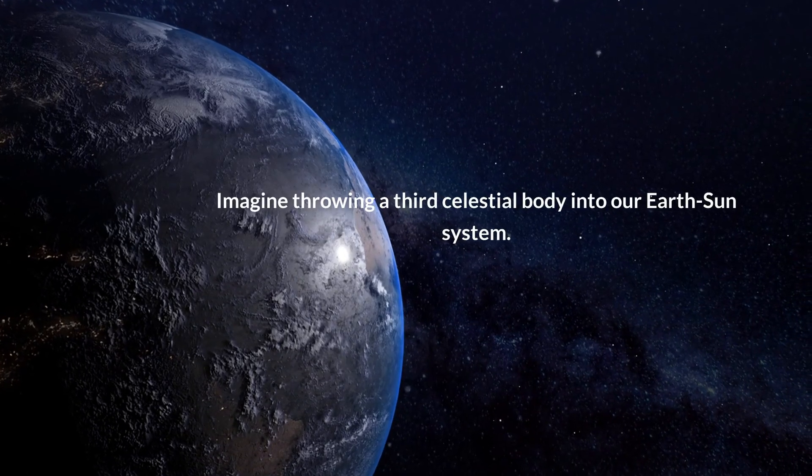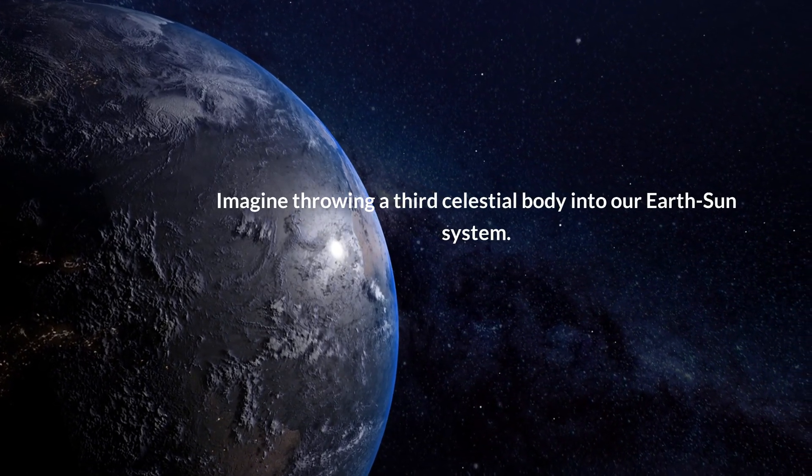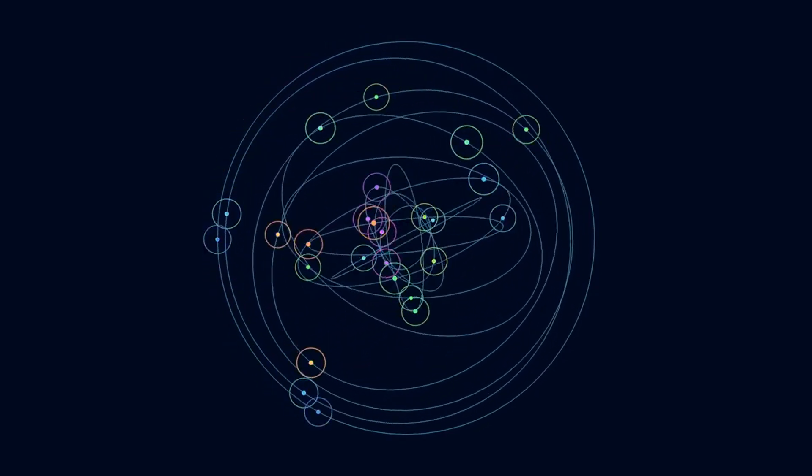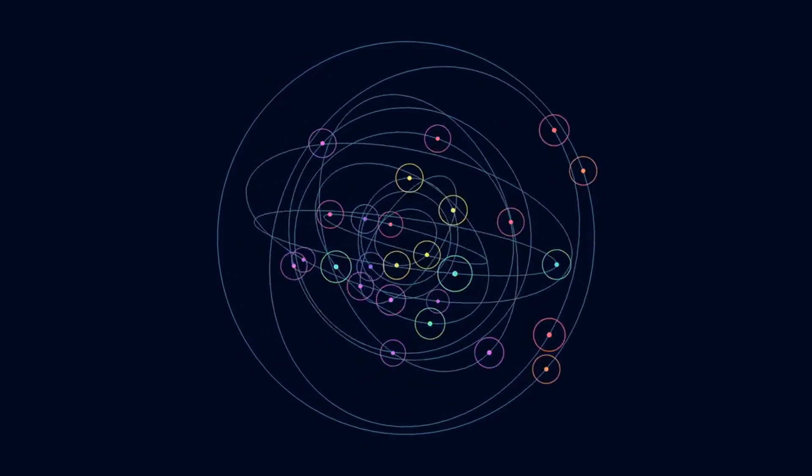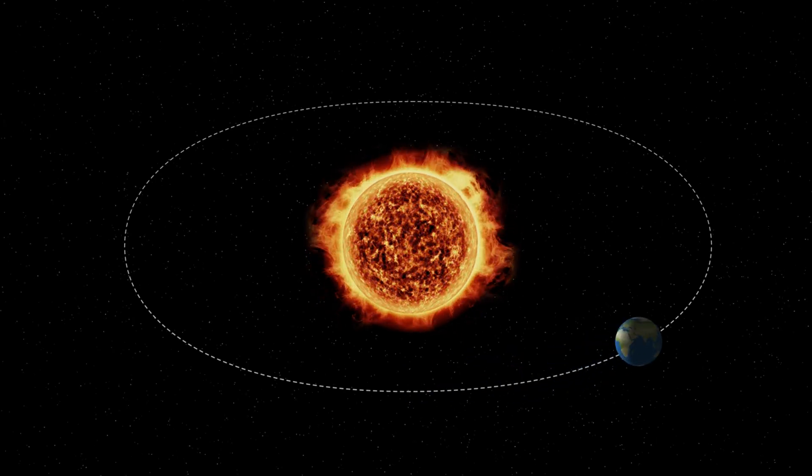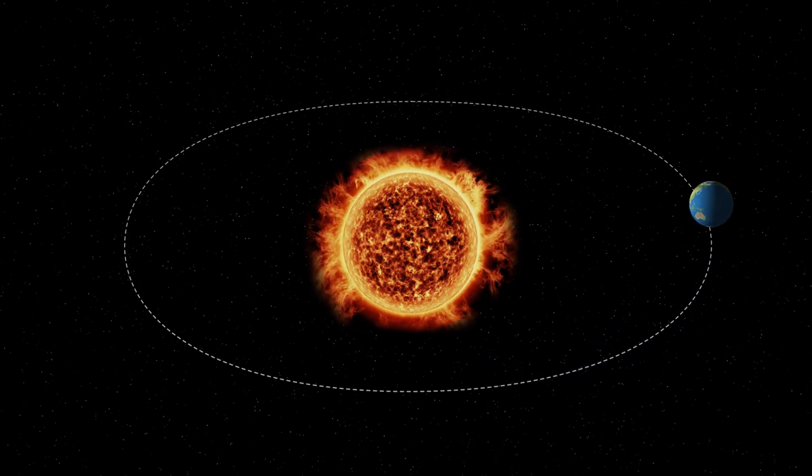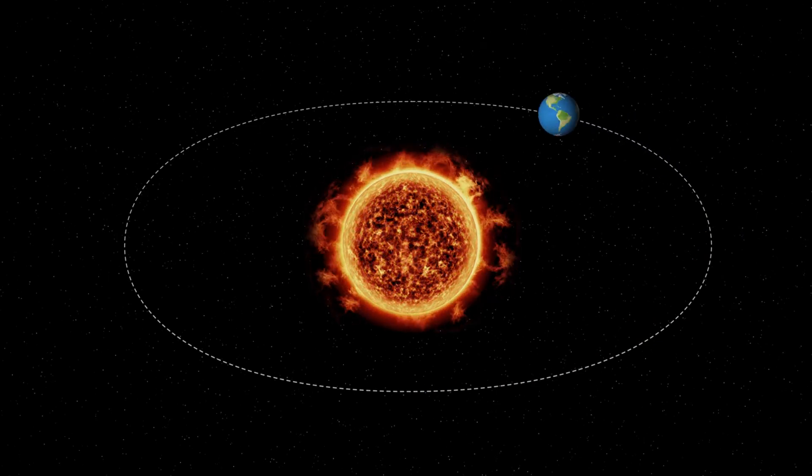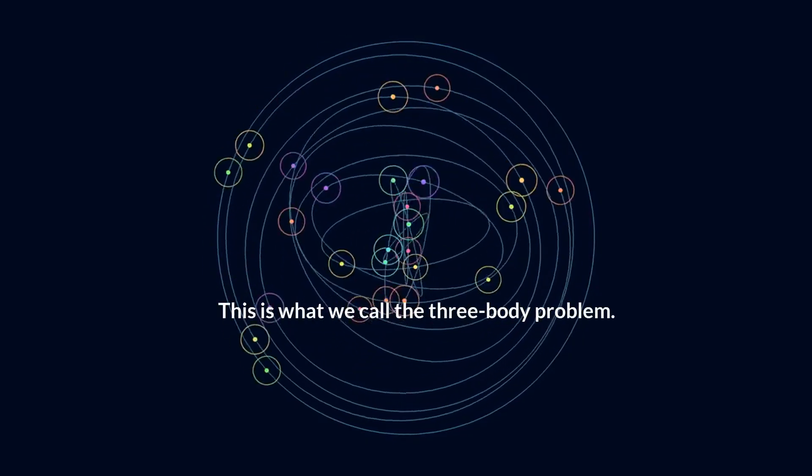Now that we understand the simplicity of the two-body problem, it's time to introduce a third body into the mix, just as the story unravels in the popular Netflix series. Imagine throwing a third celestial body into our Earth-Sun system. When we introduce a third celestial body into the mix, we're no longer dealing with a simple, predictable two-body problem. We're entering a zone of complexity where the dance of celestial bodies becomes an intricate ballet of gravitational forces.